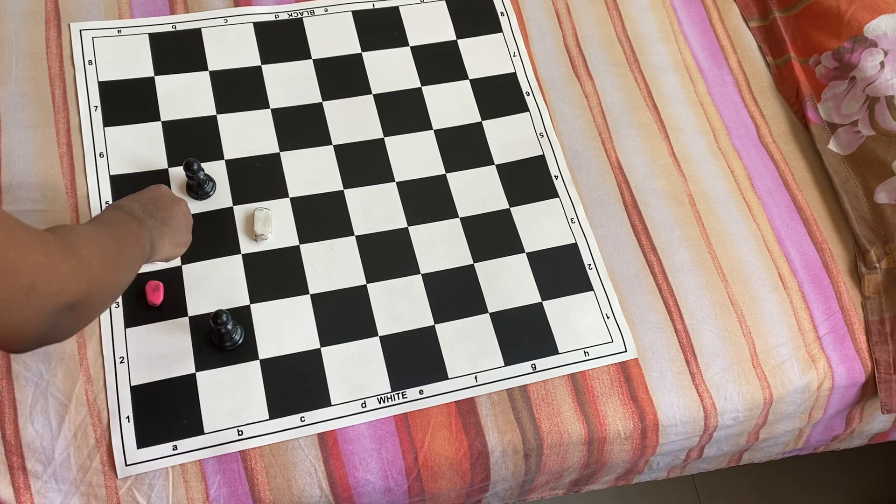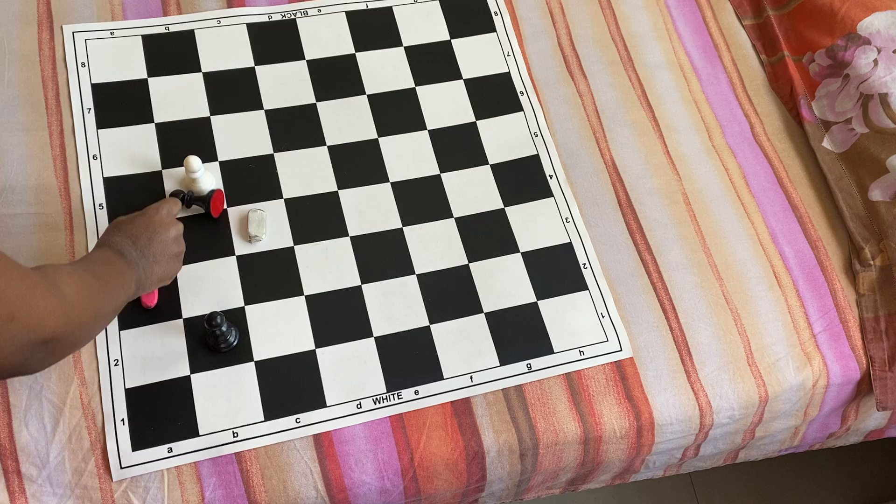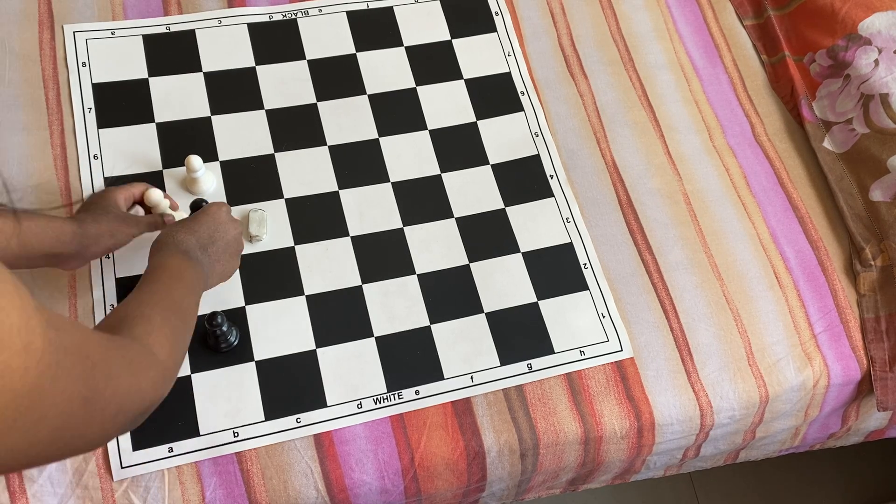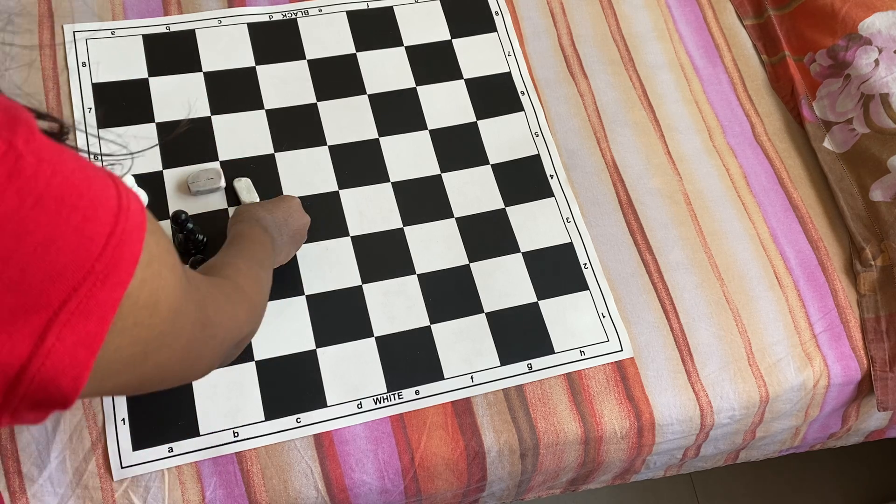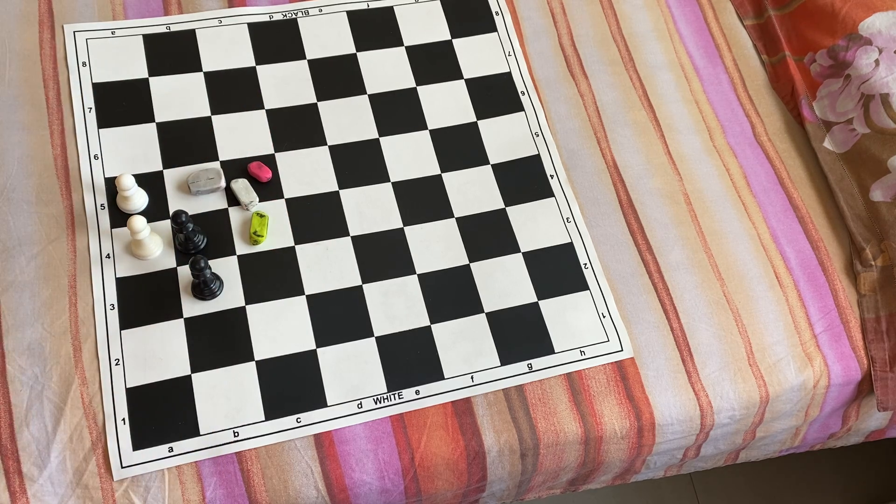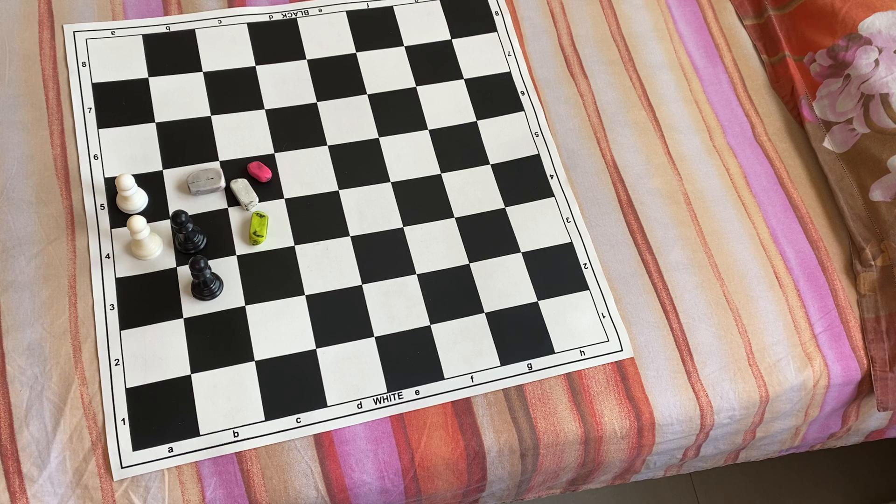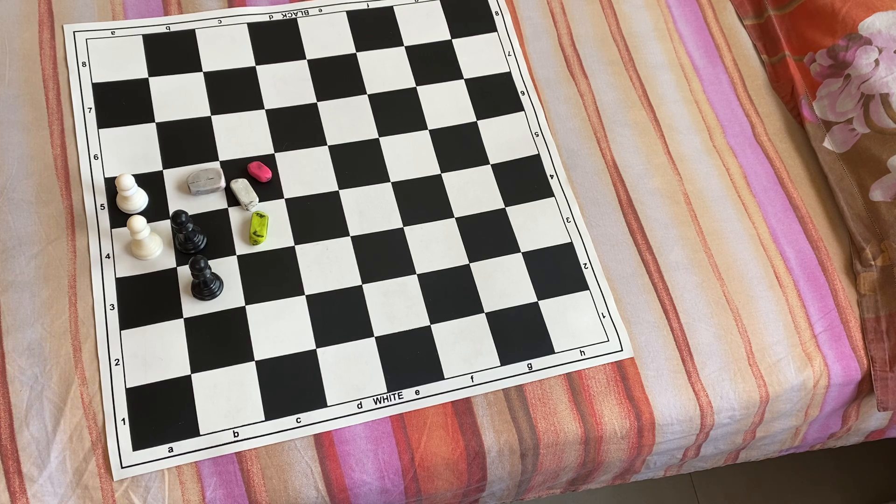But in the same way, in the white's chance, it would kill here. So that's how a pawn can capture a pawn or another piece. So I hope you understood. If you didn't understand anything, then type what's your question in the comments box below.